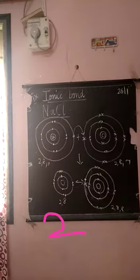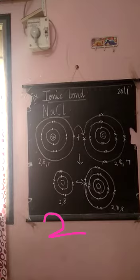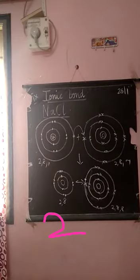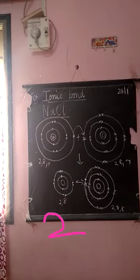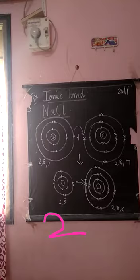Come to chlorine. In that 2, 8, 7 — in the valence shell, 7 electrons are there. If it gains 1 electron from another atom, what is the change in electronic configuration? 2, 8, 8. Again, it can attain the stable electronic configuration. So, both atoms want to get a stable electronic configuration. Sodium is going to lose 1 electron and chlorine atom is going to get 1 electron from sodium.